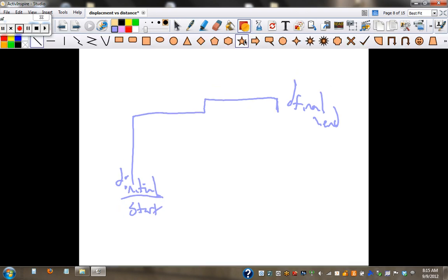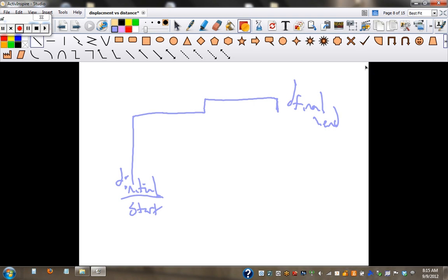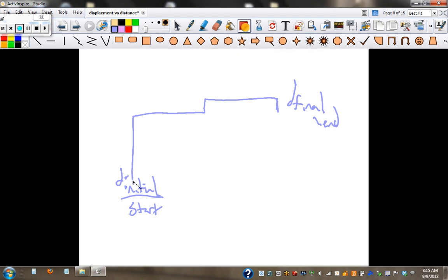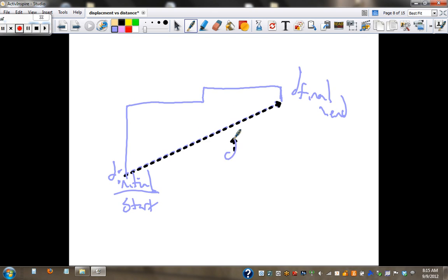And then this line I'm going to grab right here, let's do it in a different color—this is displacement. And this is your total distance. The path is your distance, the difference between the two points is your displacement.